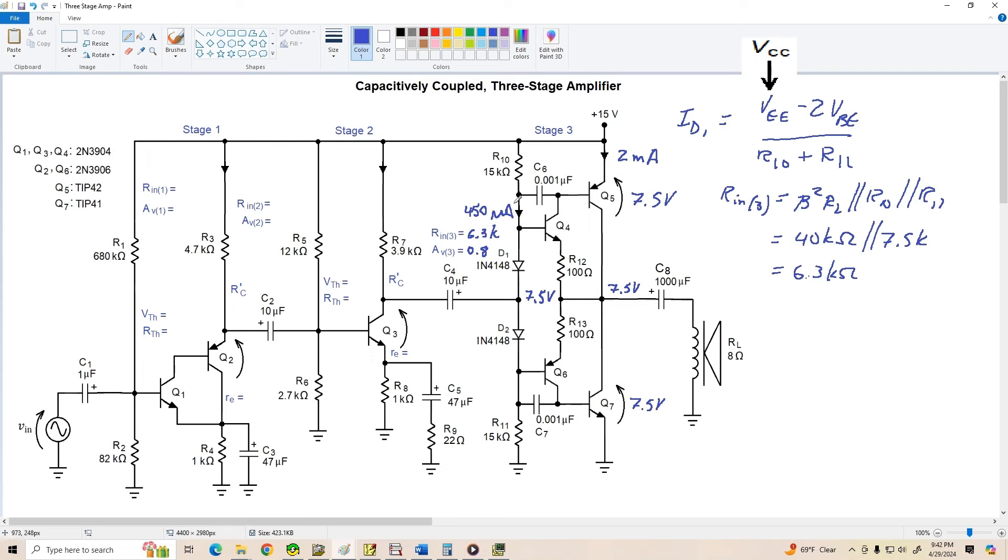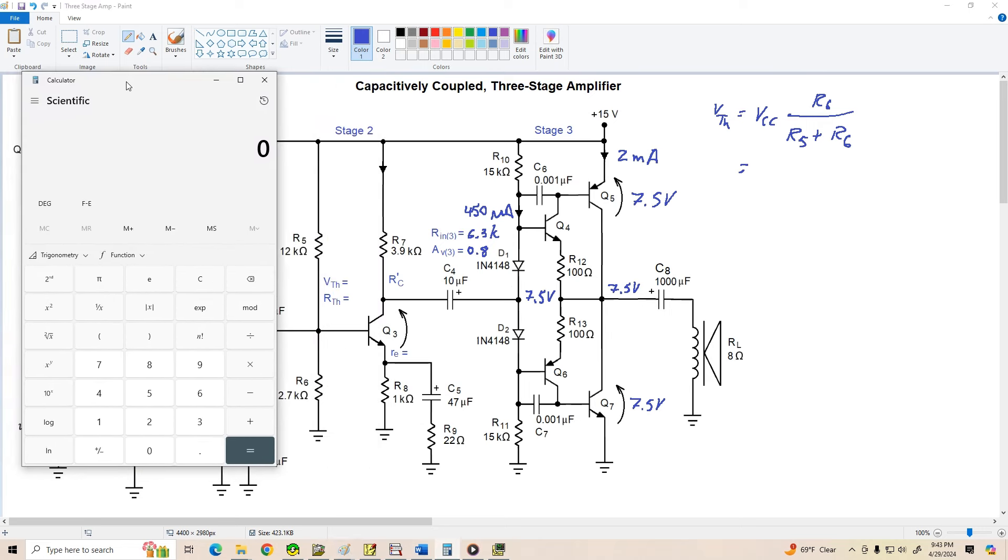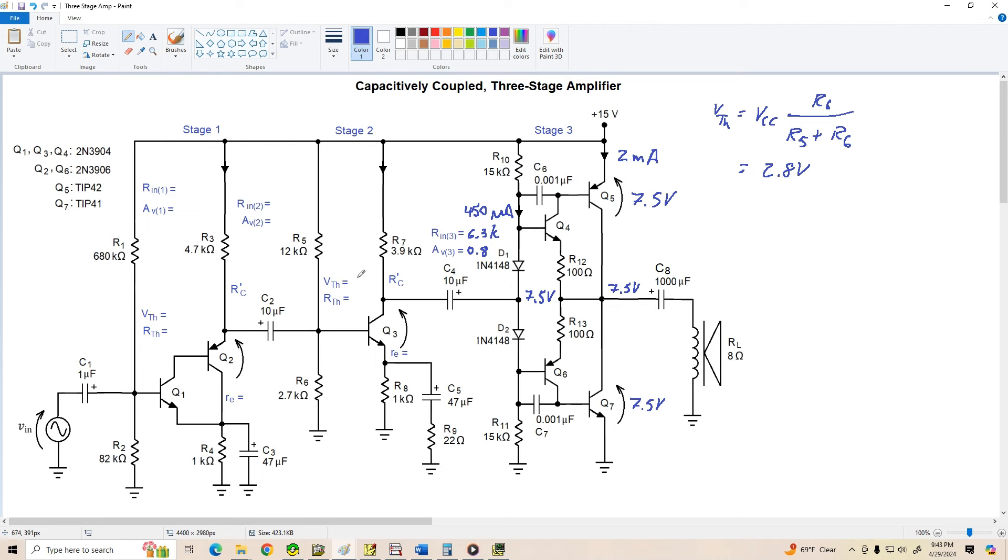So now we've written down most of the things we'd want to know about stage three. Let's go back to stage two. Let me clean off my workspace. And starting at stage two, let's find VTH and RTH. So VTH for stage two is VCC times R6 divided by R5 plus R6. So let's see what we end up with here. R6 is 2.7k divided by 2.7k plus 12k times 15 is about 2.8 volts. So this is about 2.8 volts.